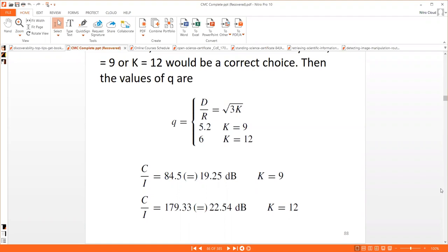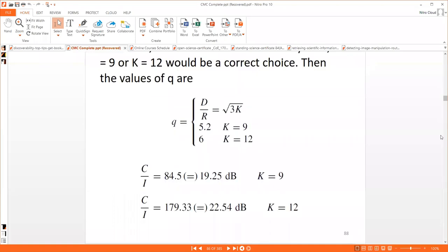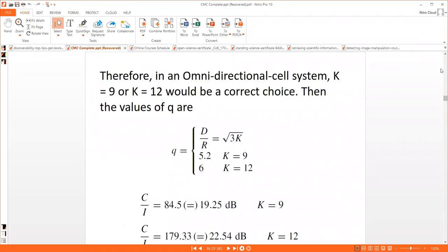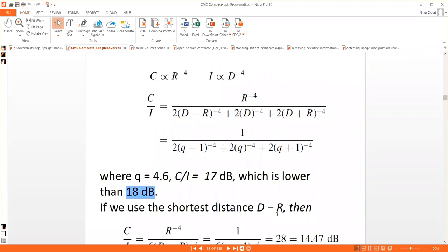As per this design, we can choose either K equals 9 or K equals 12 pattern because it achieves the decibel range required for good wireless, greater than 18 decibels. This is about the design of omnidirectional antenna for the worst case.